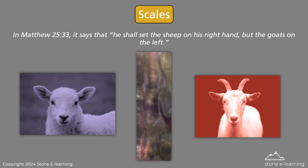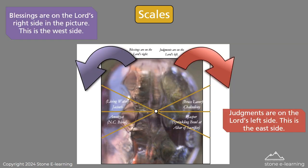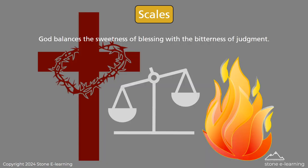In Matthew 25:33, it says that he shall set the sheep on his right hand, but the goats on the left. Blessings are on the Lord's right side in the picture — this is the west side. Judgments are on the Lord's left side — this is the east side. God balances the sweetness of blessing with the bitterness of judgment.